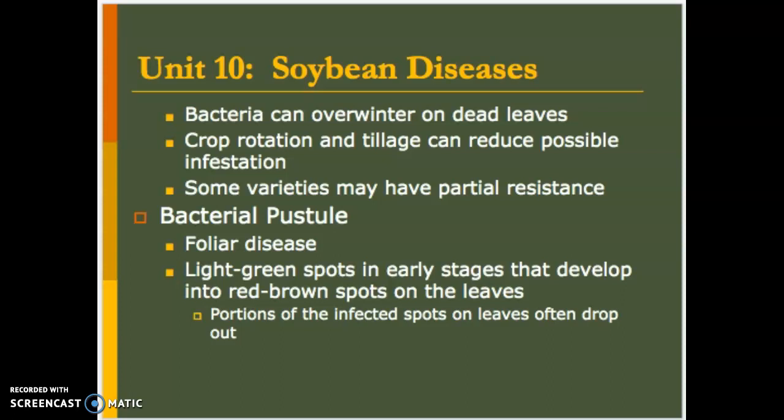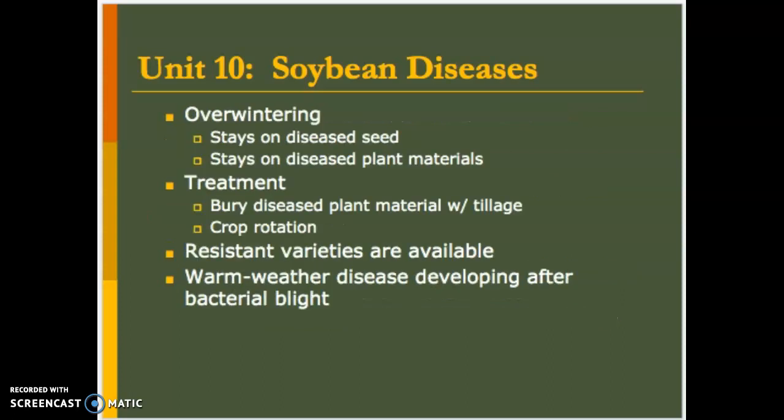Next is bacterial pustule — again a foliar disease. Light green spots develop to red and brown, and again defoliation occurs. Another one that overwinters and stays on diseased seed and diseased plant materials, so crop rotation should take care of this one. It's especially a concern in warm weather, developing after bacterial blight — kind of a cousin or related to the prior one.